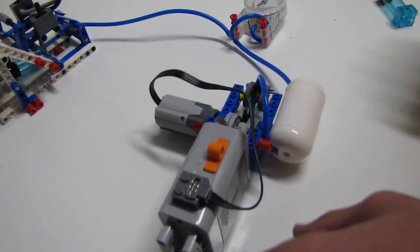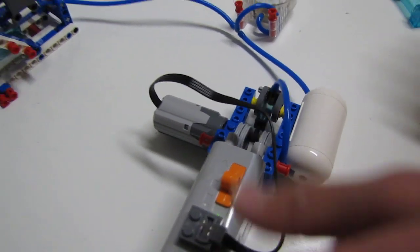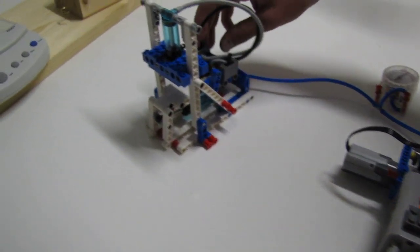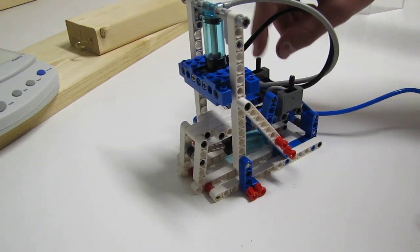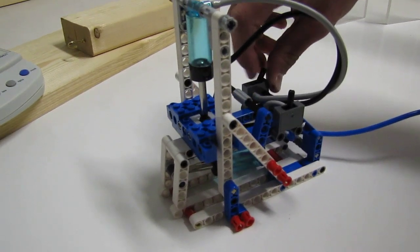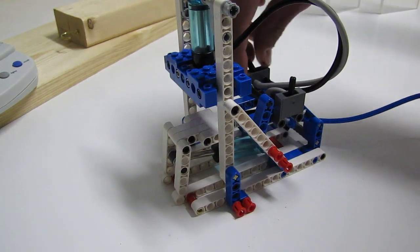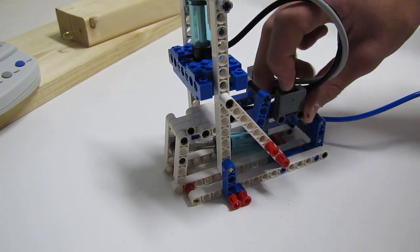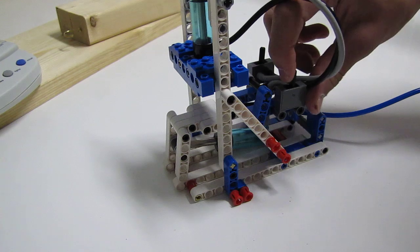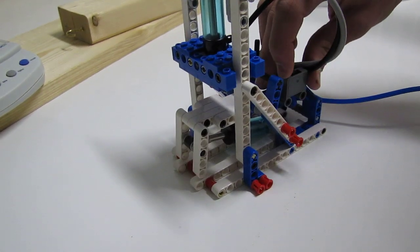All right, here's what it does. This button switch over here will push this down and then pull back up. And then this one, the newspaper would be right here, so then it would drop it and come back up.